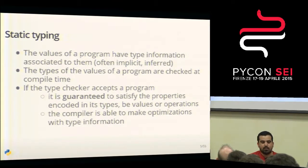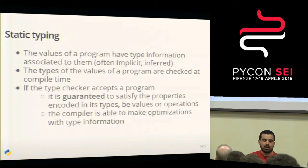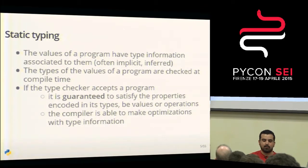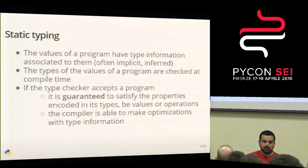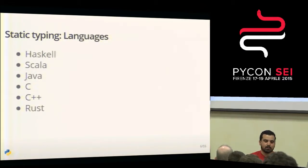In statically typed programming languages, they associate some type information with the values that we use in programs. Many times we don't have to specify them - they are inferred. Type checkers are able to figure out what types you are using without you having to explicitly tell them. These types are checked at compile time, so the soundness of the typing of your program is checked before you run the program, giving us certain guarantees about what the program does.